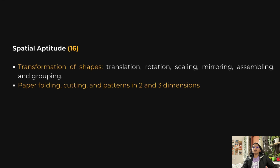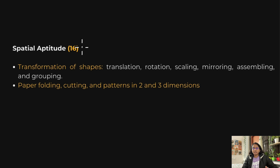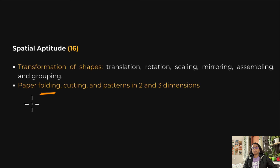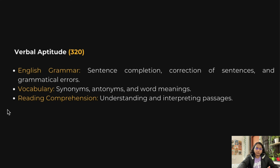In special aptitude, shapes or patterns are given to you. For example, they might say: rotate this shape by 60 degrees, then take the mirror image — how will the shape look? Topics like mirror imaging, translation, rotation, and scaling come under this. There are also paper-folding questions: draw a pattern on paper, fold it three or four times, cut something — how does the final paper look? You don't have to study anything explicitly; just practice some questions.